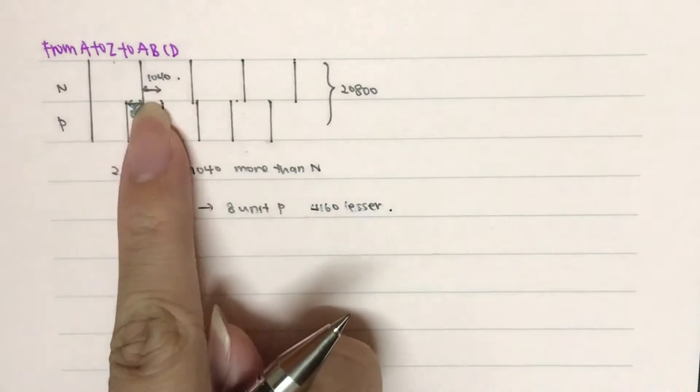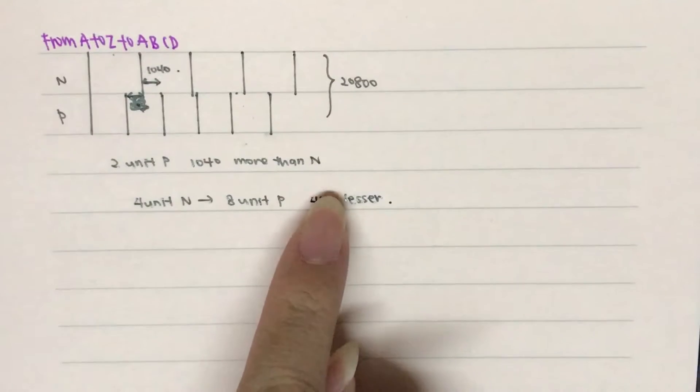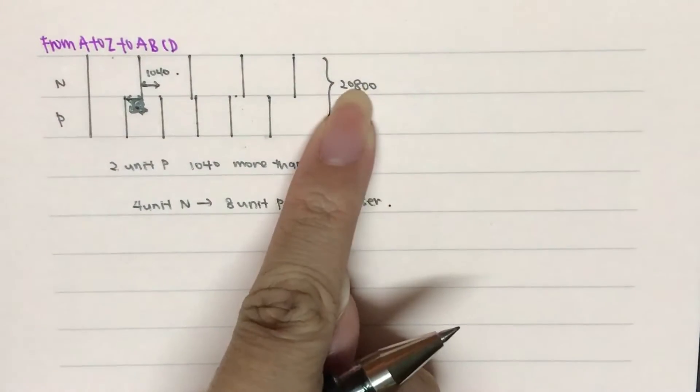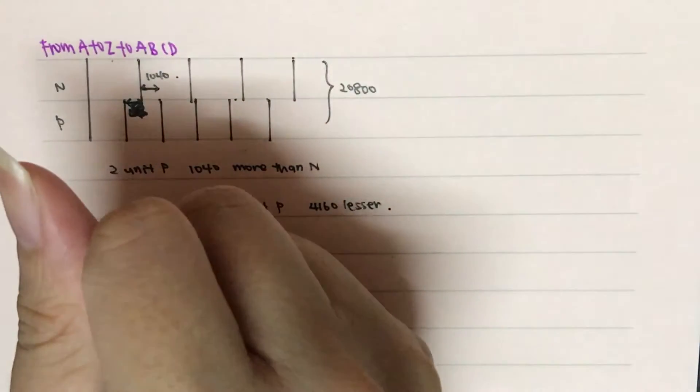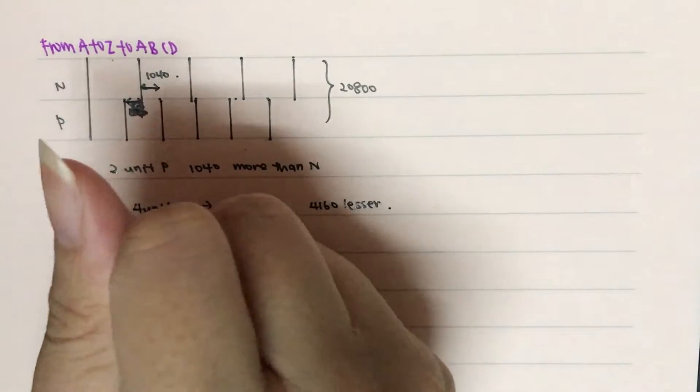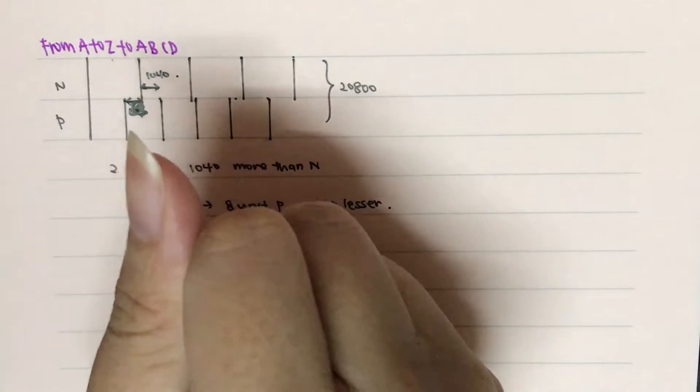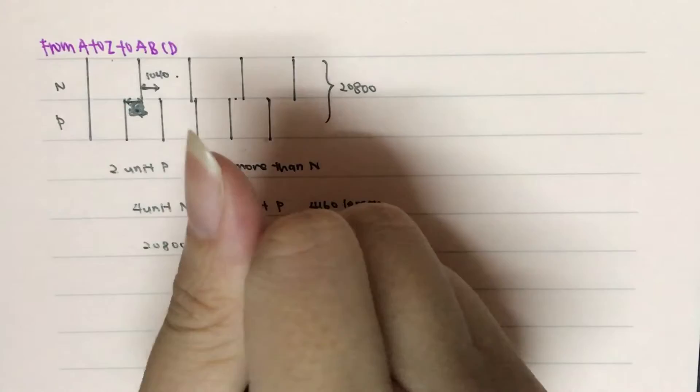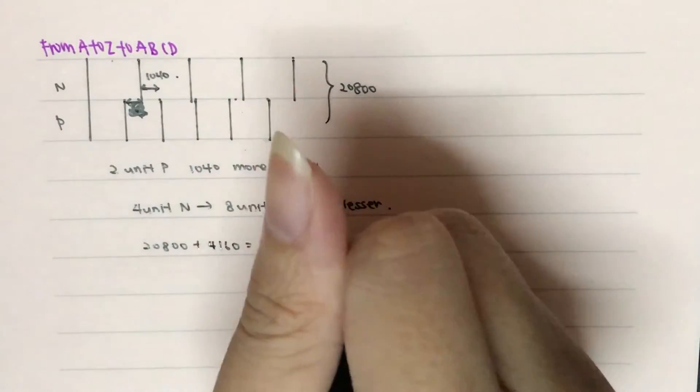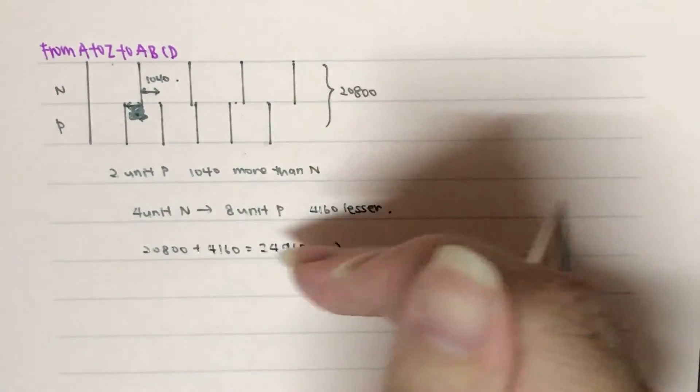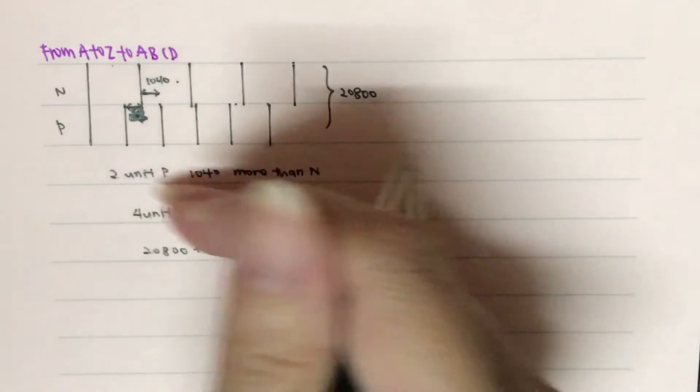Because this is 1,040 times four. So I add this amount inside here. Then, I will have 20,800 plus 4,160. And this gives us 24,960.